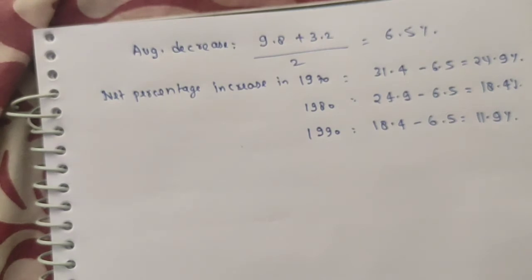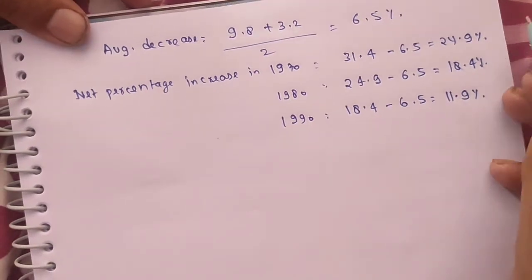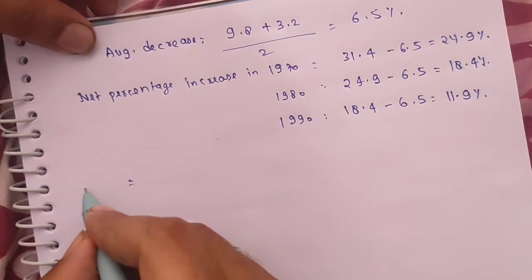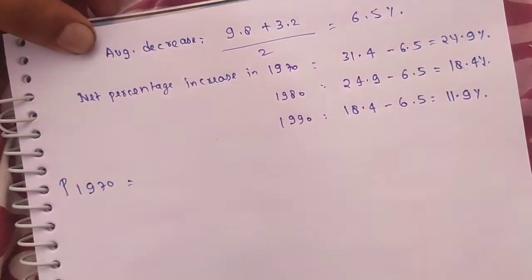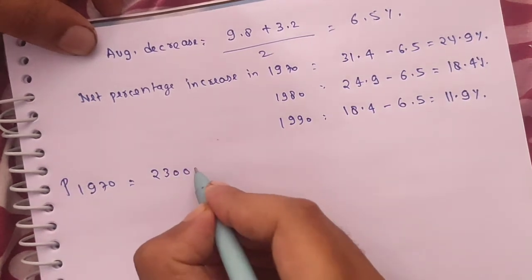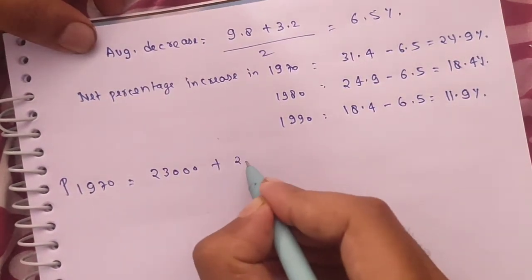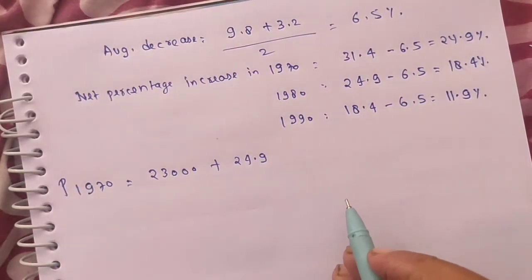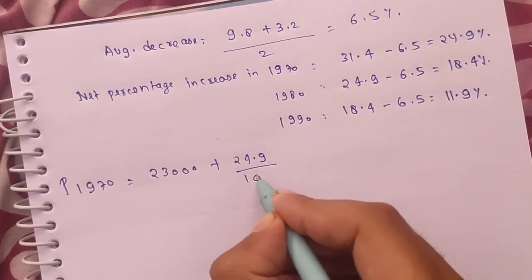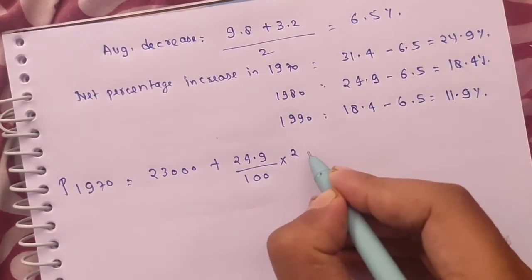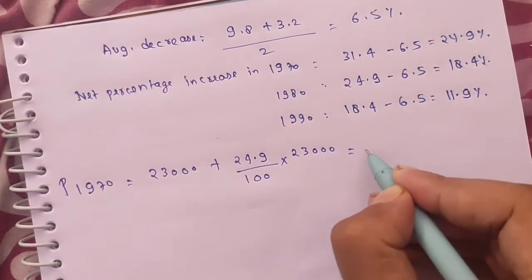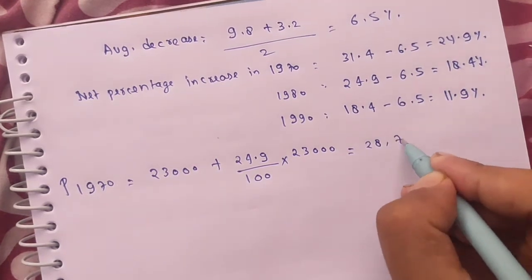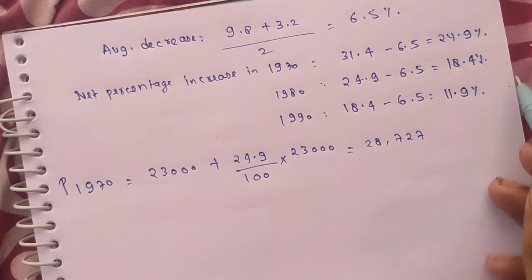The 1960 population was 23,000. A 24.9% increase is applied to find the 1970 population. Population in 1970 = 23,000 + (24.9/100 × 23,000) = 23,000 + 5,727 = 28,727.